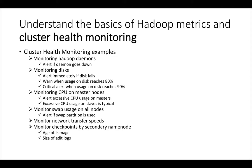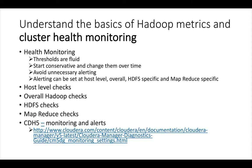Monitoring checkpoints by secondary name node or passive name node is also very important, which includes fsimage, edit logs, etc. We can configure all these things as part of health monitoring. There are some characteristics you need to understand when it comes to health monitoring — thresholds can be changed if you want. We have to start conservative and change them over time if they are generating too many alerts. We should avoid unnecessary alerting. Alerts can be set at host level, overall service level, and service component level.